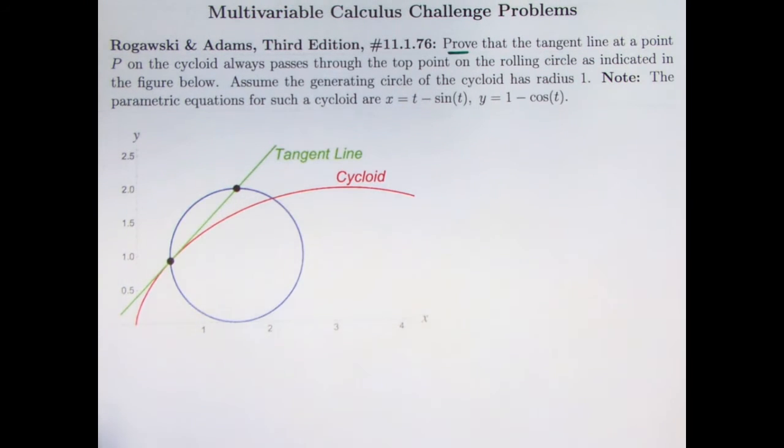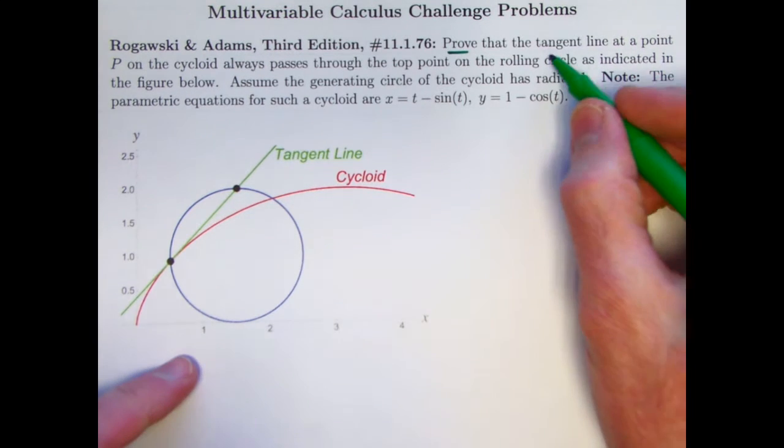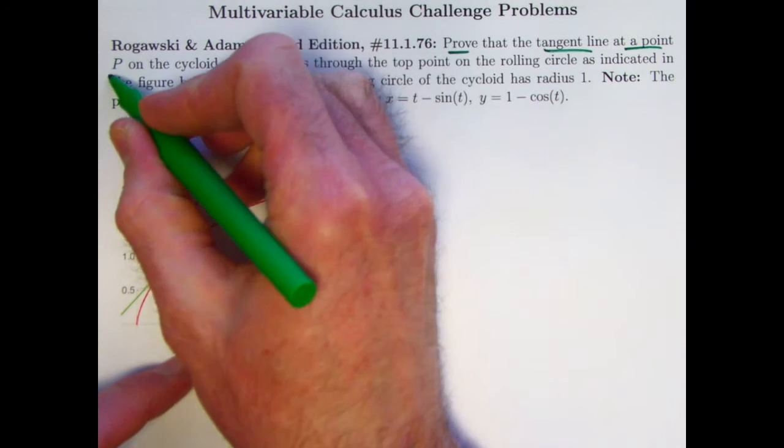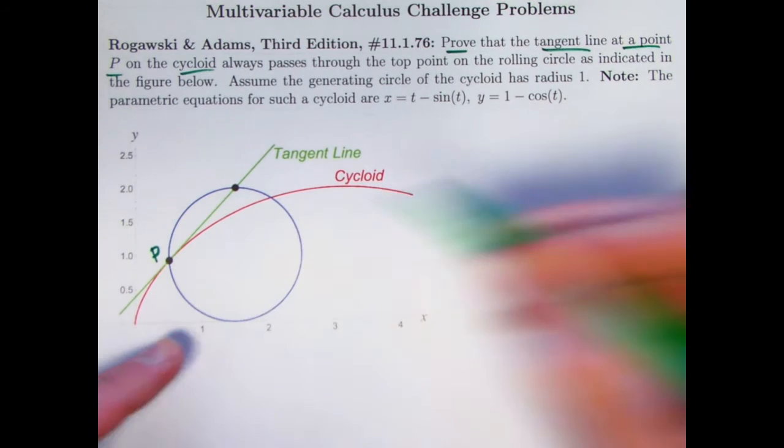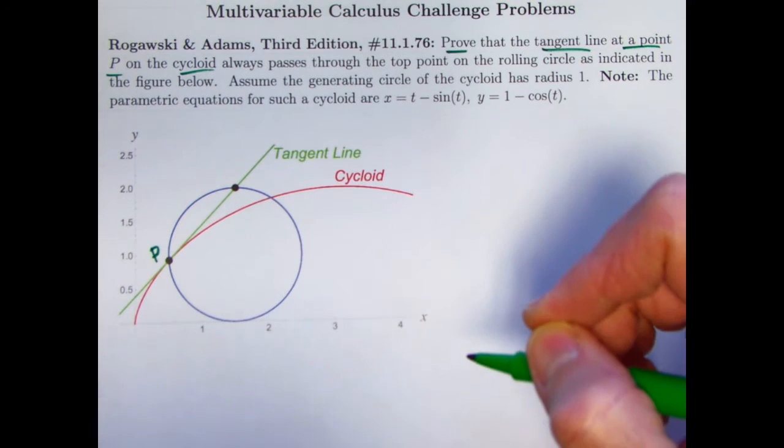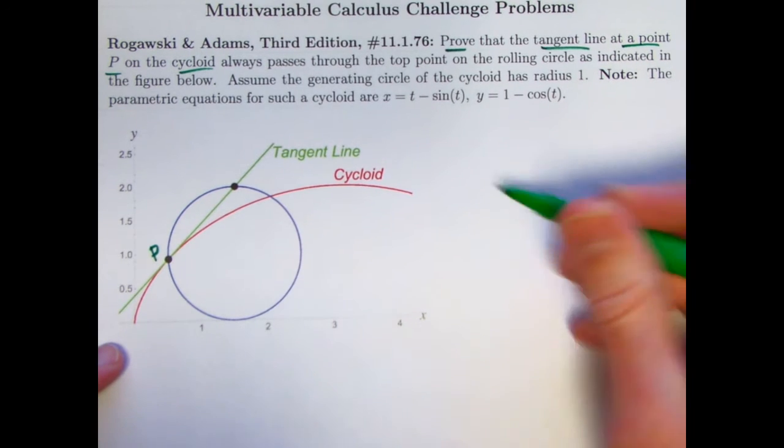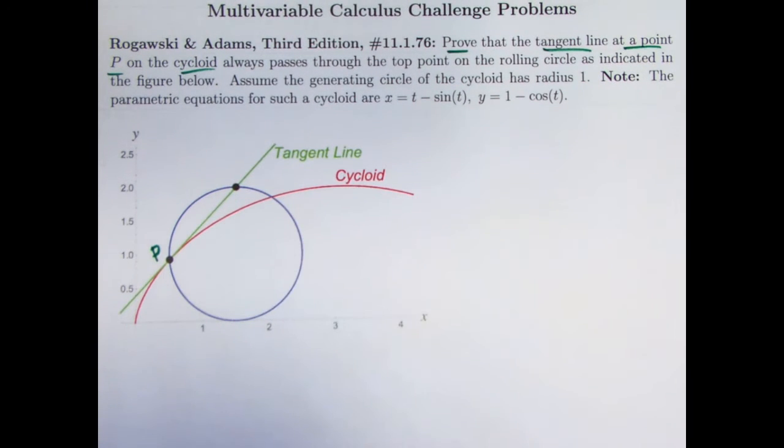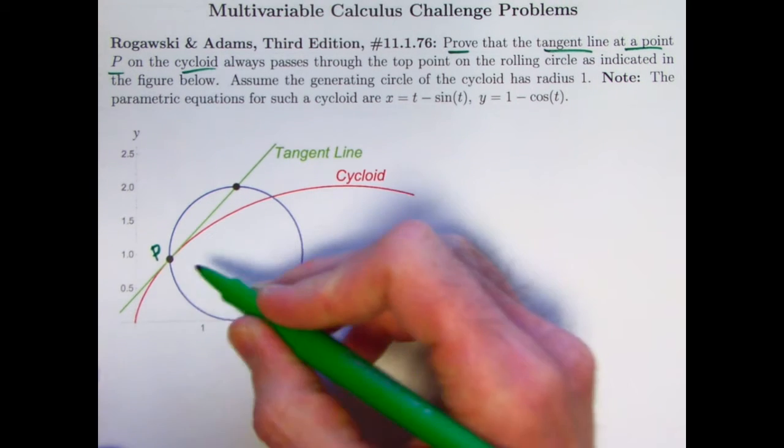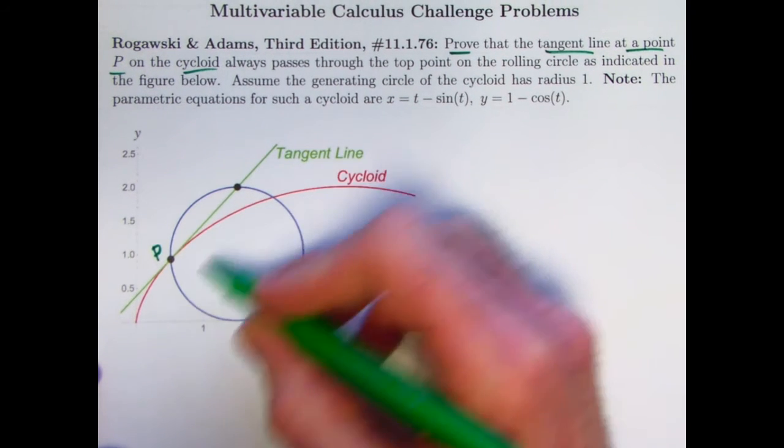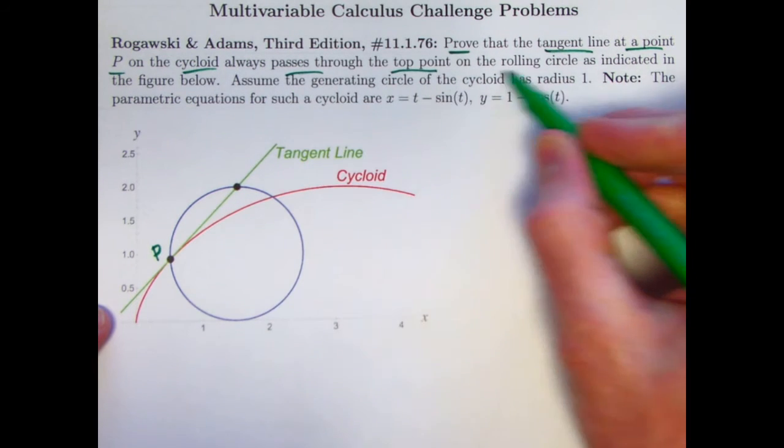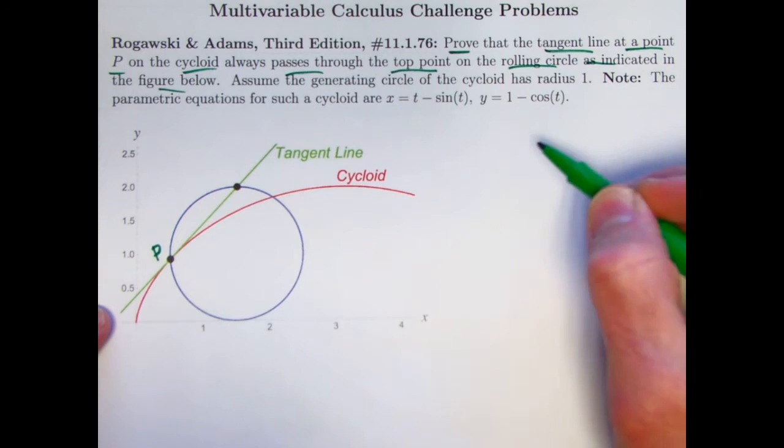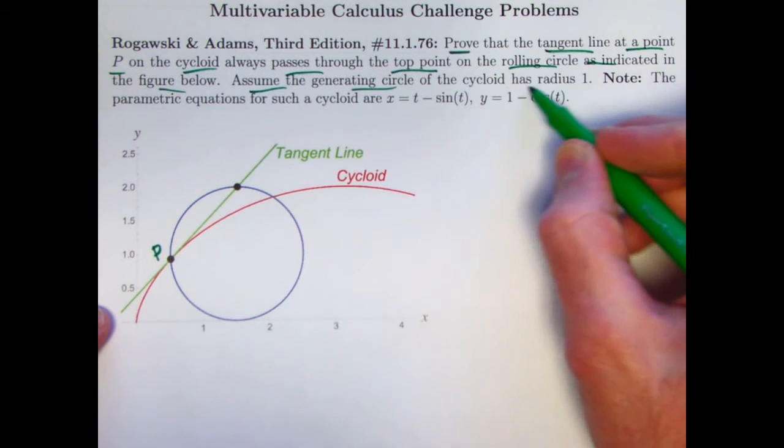We'll be proving, or verifying, that the tangent line at an arbitrary point P on this red curve here, this cycloid, always passes through the top point on the rolling circle. The circle is generating the cycloid as the circle moves to the right. This point P moves along the circle but it also traces the cycloid. It always passes through the top point of the rolling circle as indicated in the figure below.